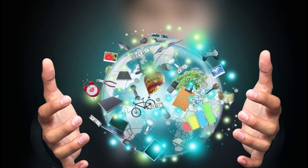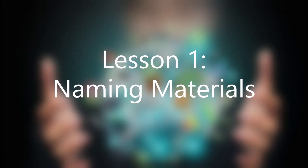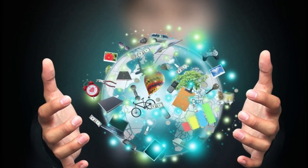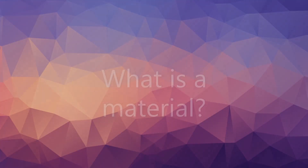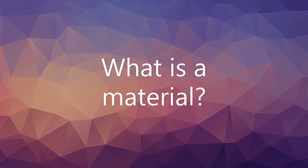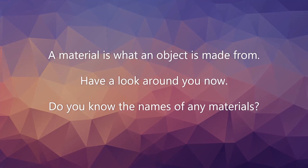Science everyday materials, lesson one: naming materials. What is a material? A material is what an object is made from. Can you have a look around you now? Do you know the names of any materials? Press pause now and name as many as you can.